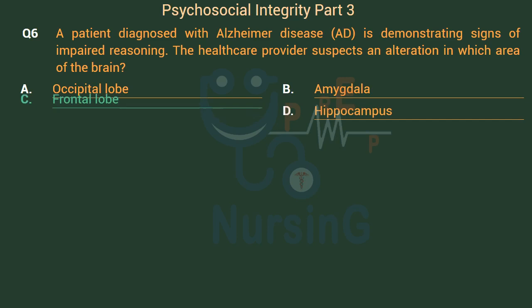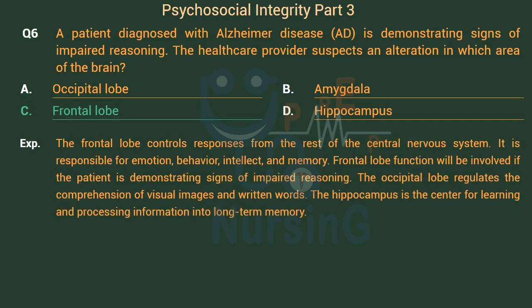The right answer is Option C: Frontal lobe. The frontal lobe controls responses from the rest of the central nervous system. It is responsible for emotion, behavior, intellect, and memory. Frontal lobe function will be involved if the patient is demonstrating signs of impaired reasoning. The occipital lobe regulates the comprehension of visual images and written words.